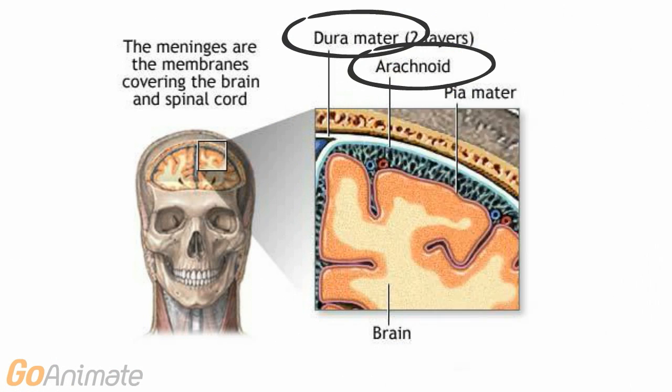The covering of the brain is called the meninges. There are three layers to the meninges. The outer tough fibrous layer is called the dura mater. On the inside of the dura mater is the arachnoid mater, and the thin pia mater contacts the brain. There is a space between the arachnoid and pia mater called the subarachnoid space, which is filled with CSF.